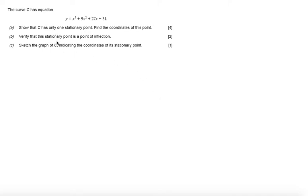The curve C has equation y equals x cubed plus 9x squared plus 27x plus 31. Part A showed that the curve C only has one stationary point. Find the coordinates of this point.